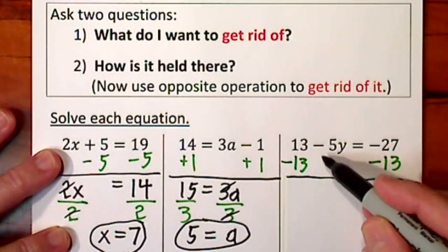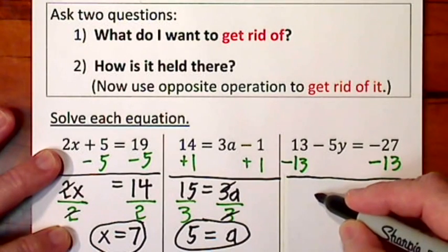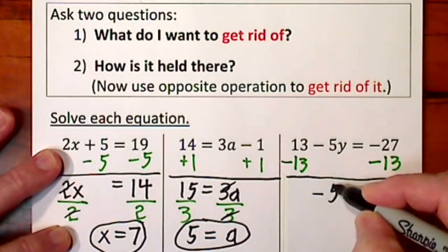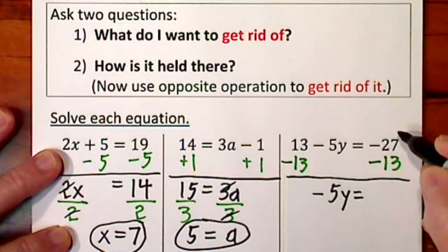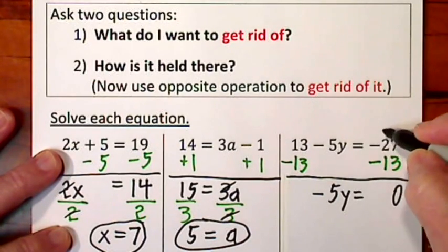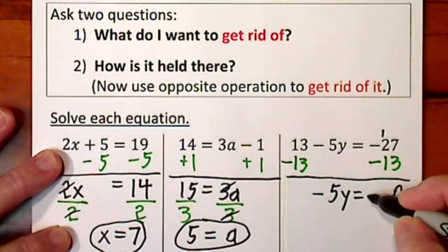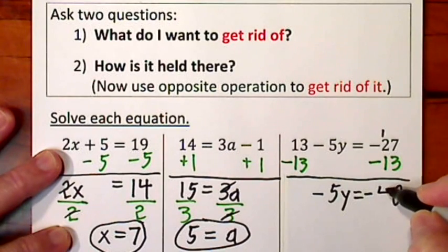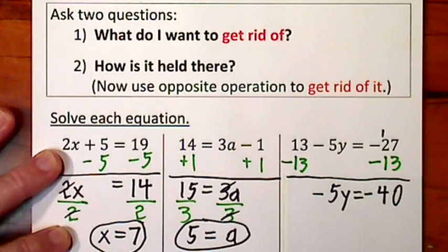Then we simply draw a line. Bring everything down. That's a zero. Don't bother to write it. Bring down our negative 5y, the equal sign. And when we add these, we get the signs are the same, so we're adding a negative 40.